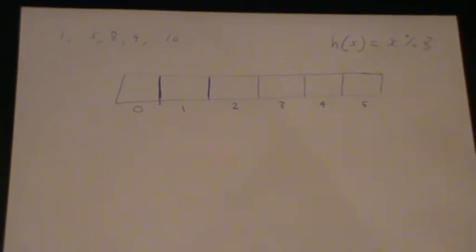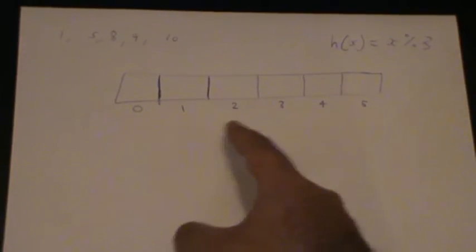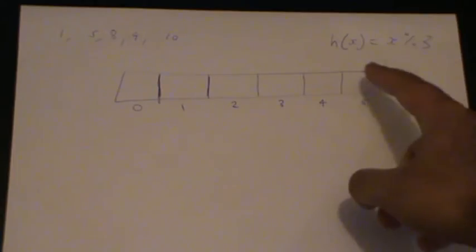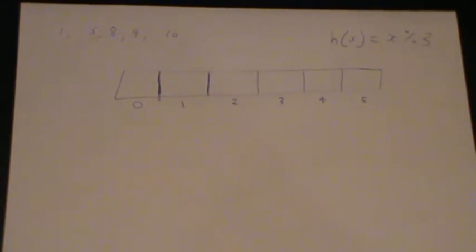Suppose we had this hash table, typically implemented by an array in C or something like that, with six slots, and we had this hash function here, which just takes a number and mods it by 3.